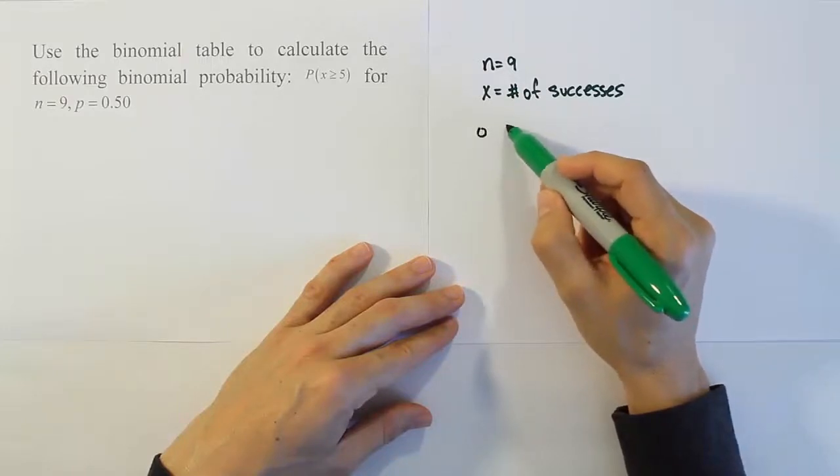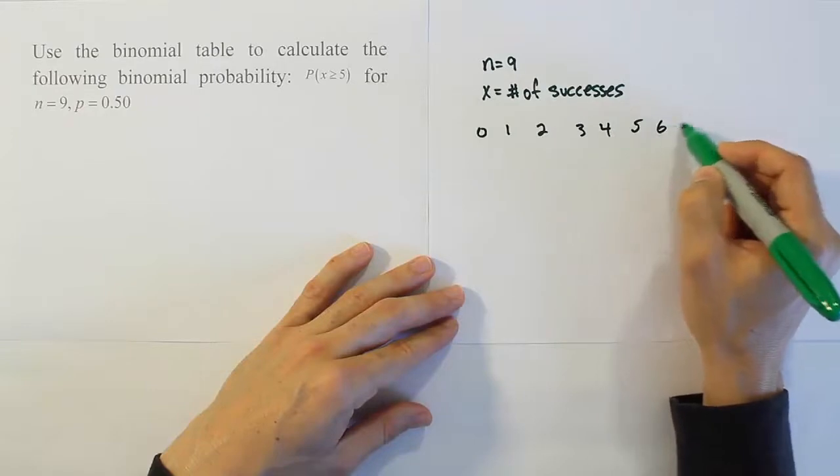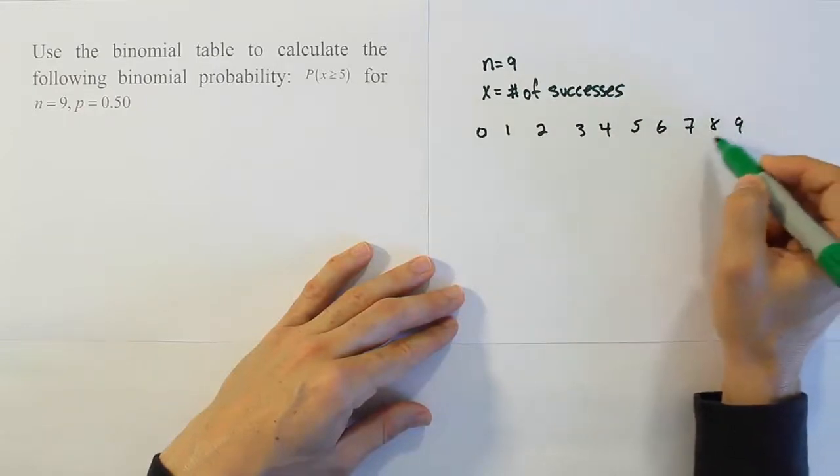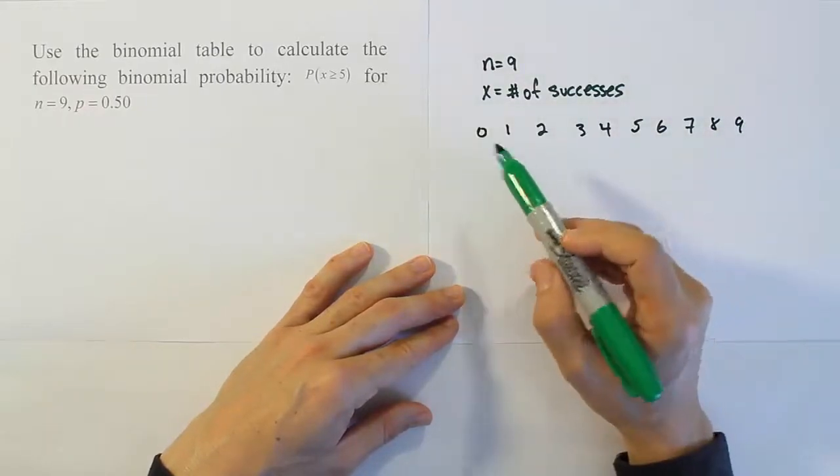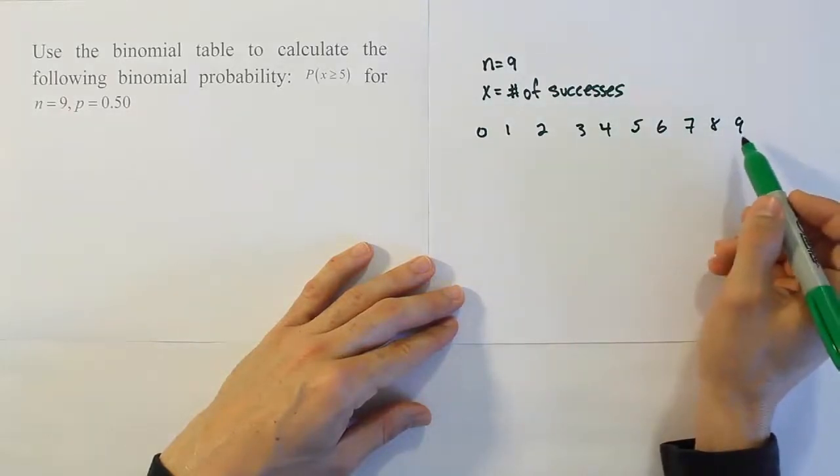Well, if you think about it, you could have 0, 1, 2, 3, 4, 5, 6, 7, 8, or all 9 of them be successful. You could have none of them be successful, just one of them be successful, all the way up to 9 of them being successful.